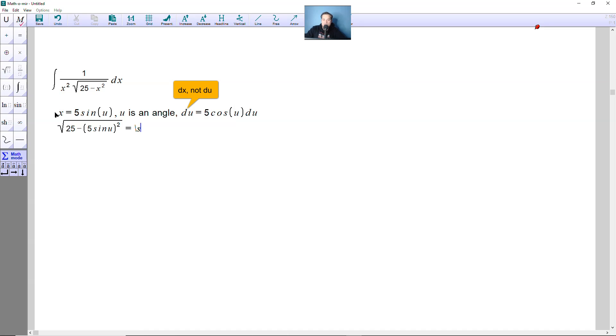And then from here the next step would look like 25 minus 25 sine squared u. And then next one here, pull the 25 from each term inside there. So this would be now under the root symbol 25 and then 1 minus sine squared u.